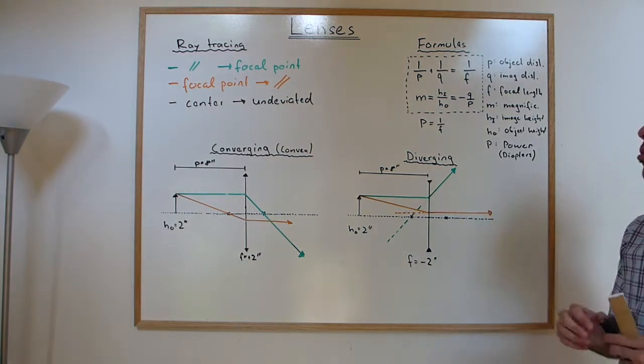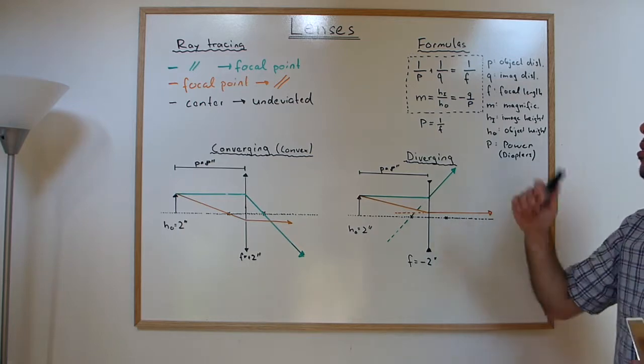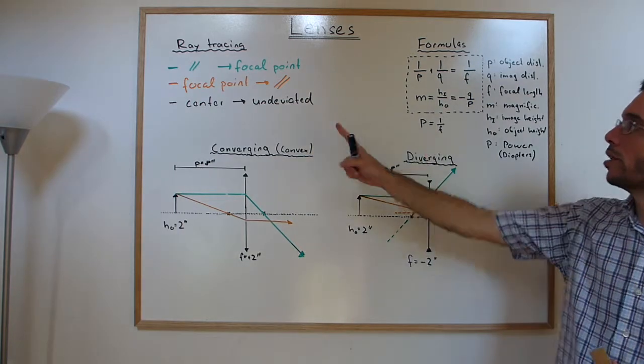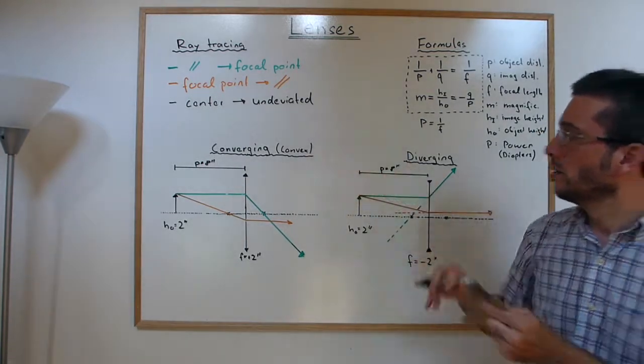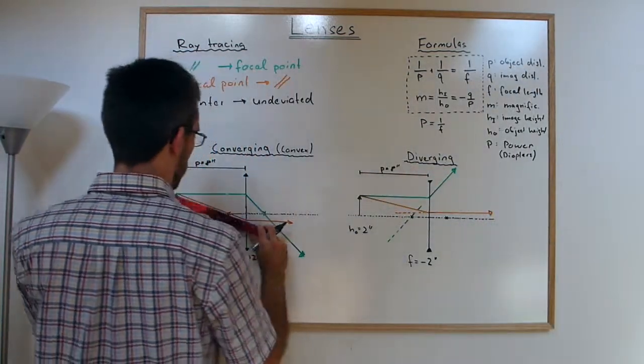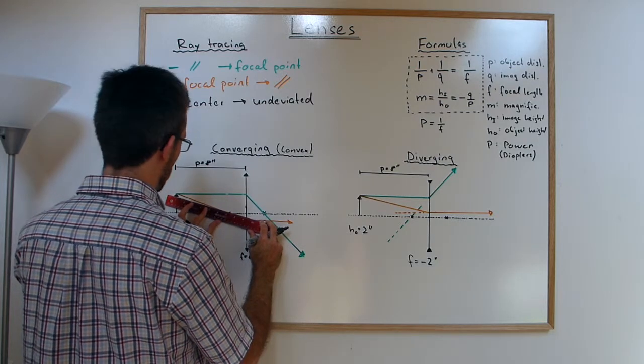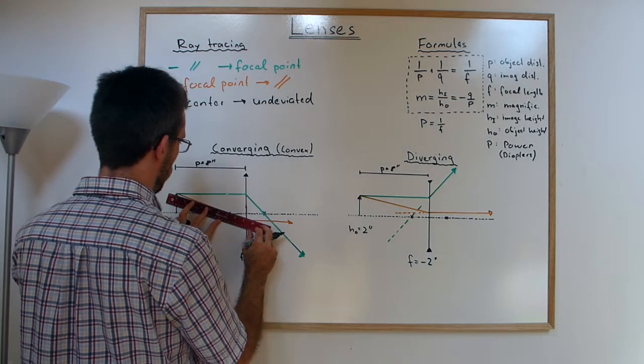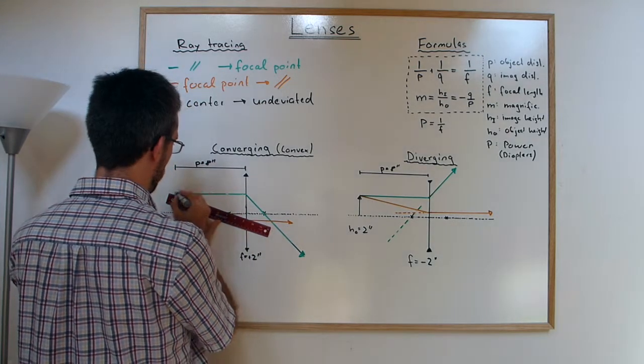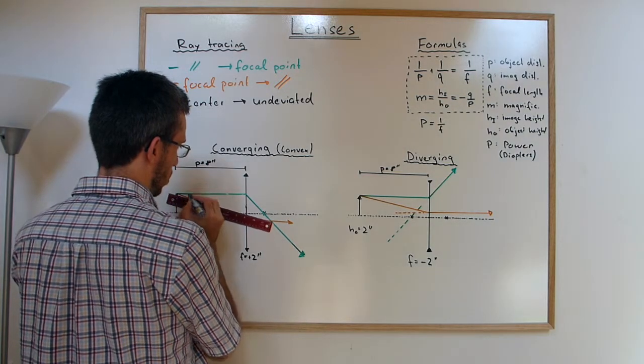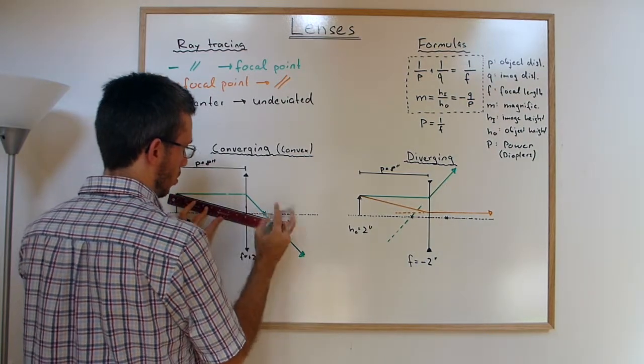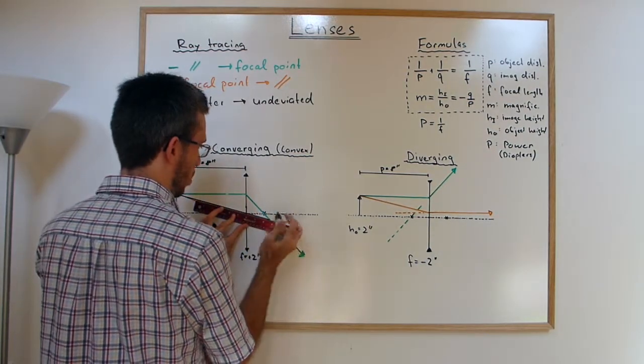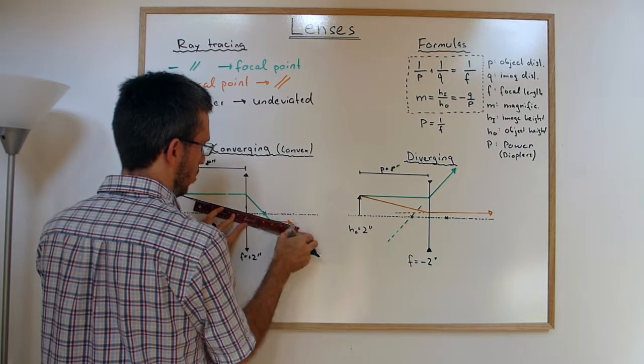Actually only two rays are needed to find the image, but if you have a third one, that can confirm the location of the image. So that is actually the easiest one. One that goes through the center of the lens does not change direction at all. Same thing here.